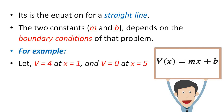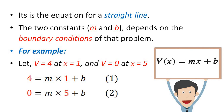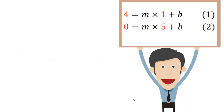For example, consider the boundary conditions V = 4 at x = 1 and V = 0 at x = 5. Substituting the first condition into V = mx + b gives: 4 = m(1) + b. Substituting the second condition gives: 0 = m(5) + b. So we have two equations and two unknowns.